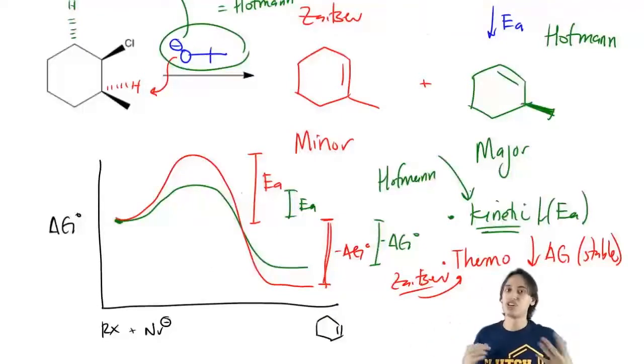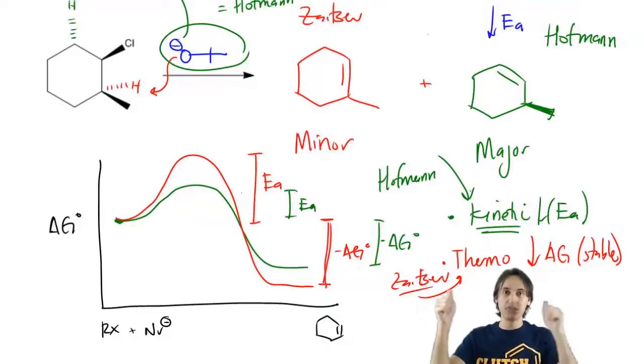I just really want you to understand the difference between Zaitsev and Hofmann and how one is thermodynamic and one is kinetic. So let's go ahead and do some practice problems based on Zaitsev's rule.